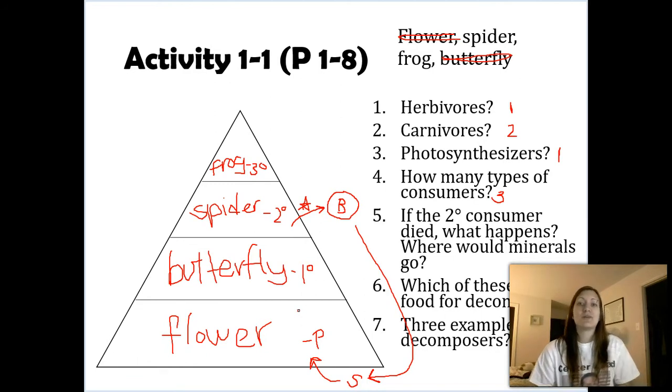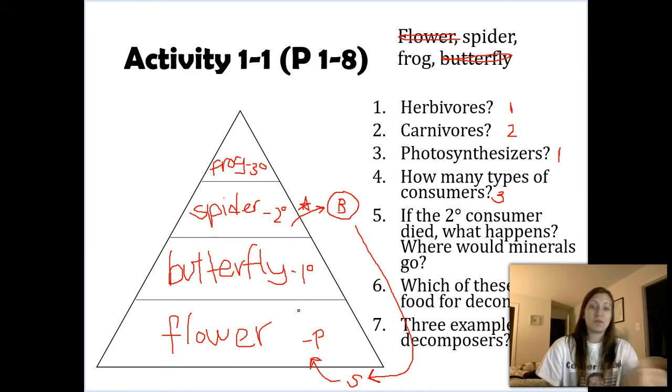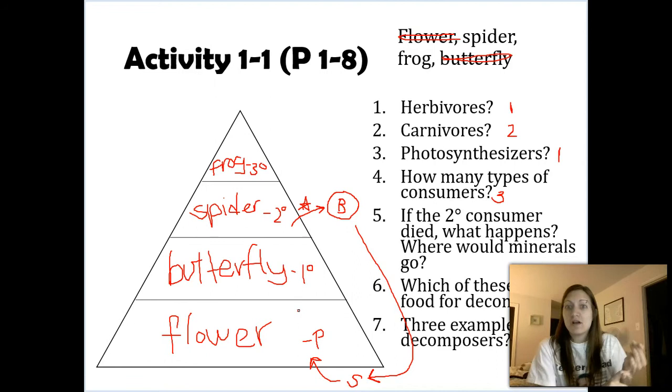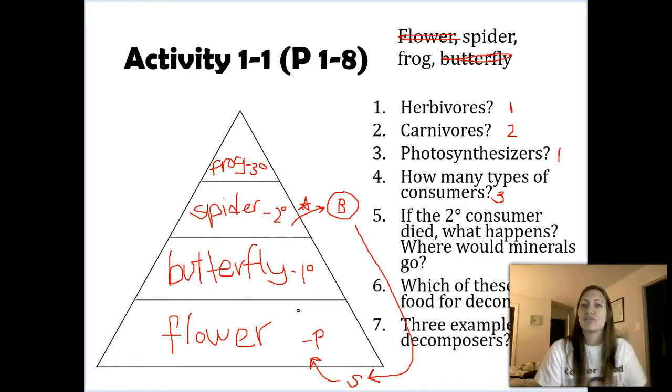The last question just asks, what are three different kinds of decomposers we might see in this ecosystem? One could be bacteria. You could think of mushrooms, think of worms, vultures. Those are the big three, but just any examples of decomposers could really work here. So hopefully you understood that exercise in your review quiz. You're going to see a couple more questions like this.